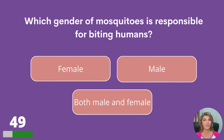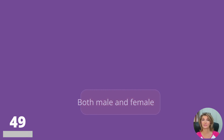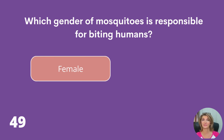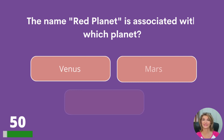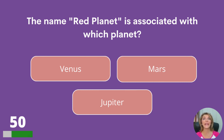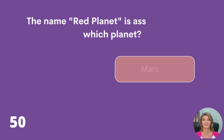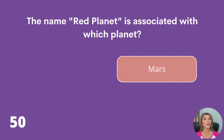Which gender of mosquitoes is responsible for biting humans: female, male, or both? The name 'Red Planet' is associated with which planet: Venus, Mars, or Jupiter? Mars.